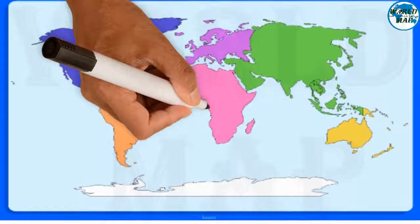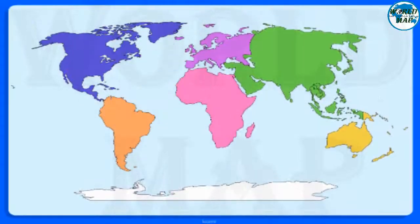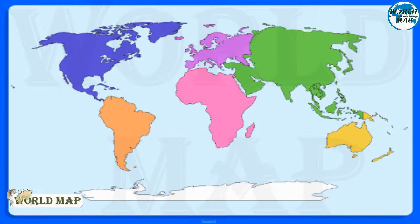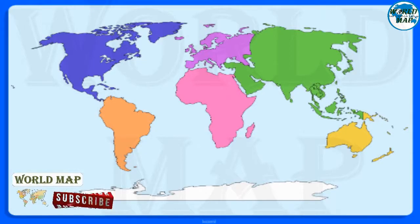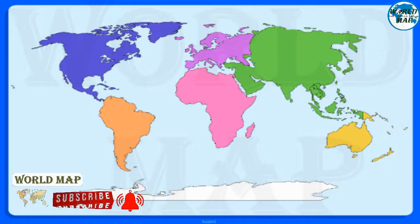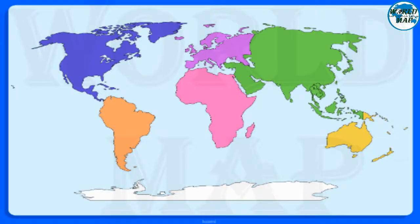A continent is one of Earth's seven main divisions of land. The continents are, from largest to smallest: Asia, Africa, North America, South America, Antarctica, Europe, and Australia.